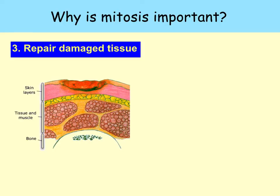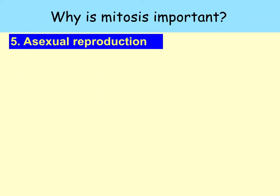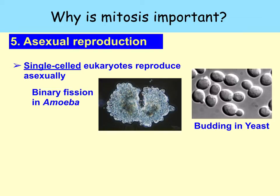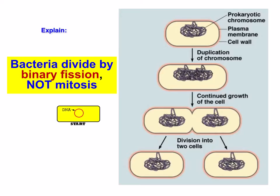If the new cells were not exact copies of the ones that have been lost, the tissue would not function as effectively as before. Mitosis is also used to replace cells — for example, red blood cells. And it's used in asexual reproduction, which is the production of new individuals of a species by one parent organism. Examples include the amoeba, where cell division results in reproduction, and in multicellular eukaryotes where new individuals are produced by budding from the parent — for example, the hydra. Note that bacteria divide by binary fission, not mitosis, because they don't have a nucleus.